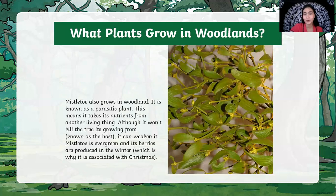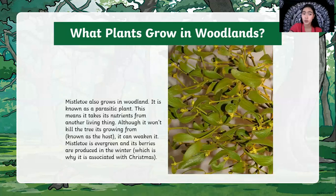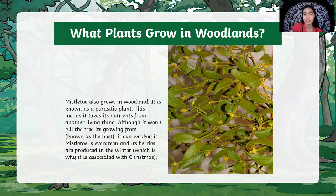Mistletoe also grows in woodland. It is known as a parasitic plant — when we say parasitic, it relies on the host to live. This means that it takes nutrients from another living thing. The parasite is the mistletoe and the host is the tree. The mistletoe needs the tree to get nutrients, although it can weaken it. Mistletoe is evergreen and its berries are produced in the winter — that's why we know mistletoe during Christmas.